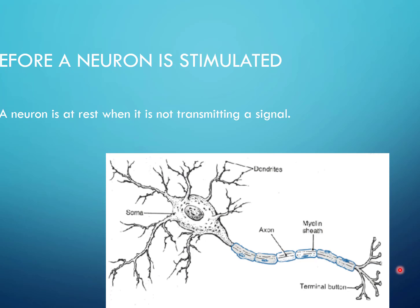A neuron is at rest when it is not transmitting a signal. Let's go over the parts of a neuron. The dendrites sense the external environment and pass information about stimuli to the soma. The soma is like the brain of the neuron — it determines if this information will be transmitted to the brain or not. It makes a decision.